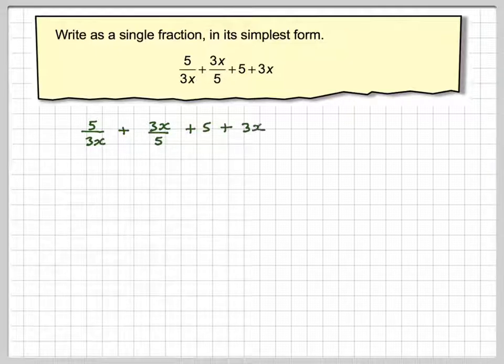So if we just write that out, what we're going to look for is a common denominator. The only common denominator we can come up from, these are over 1 although it's not written, is 3x times 5, which is 15x.